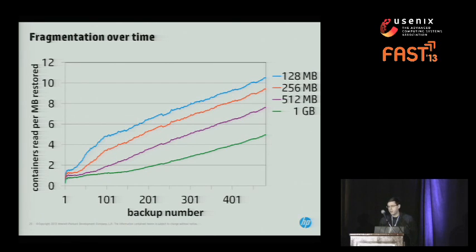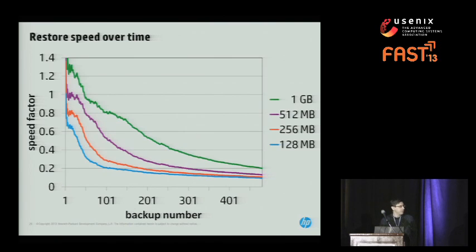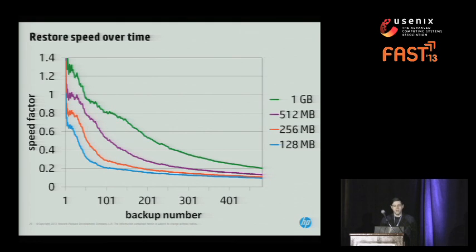The speed factor — our restore proxy — is the reciprocal of fragmentation. Over time, your restore gets slower and slower. Because this is the reciprocal of a linearly growing curve, you can roughly think of it as: after some initial constants have been overcome, as you double the number of backups, you halve the restore speed. Needless to say, this is not good.